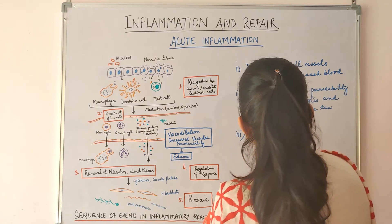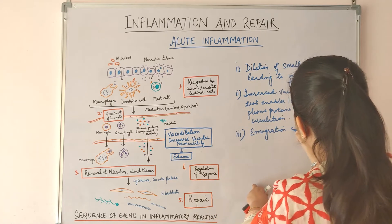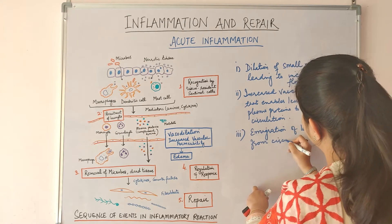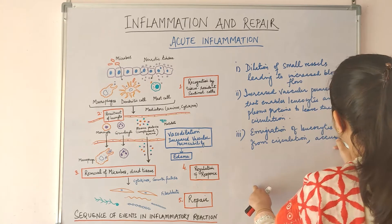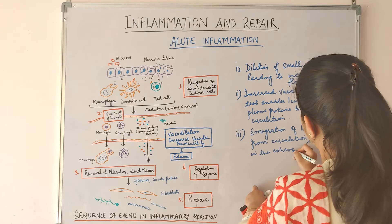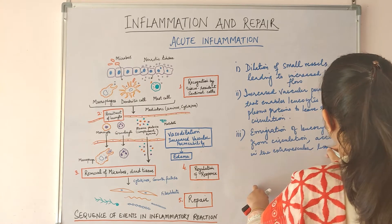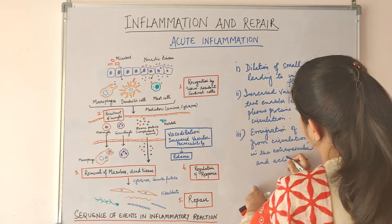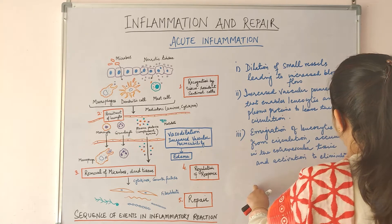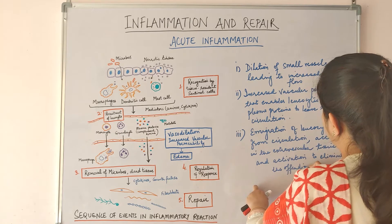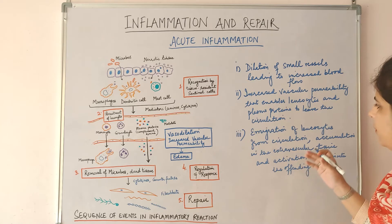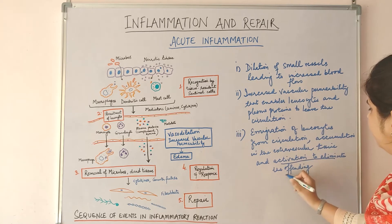The third component is emigration of leukocytes from the circulation, their accumulation in the extravascular tissue, and their activation in order to eliminate the offending agent. Normally, leukocytes which are circulating in the blood are not active — they are in a stable form — so they need to be activated in order to eliminate the offending agent.